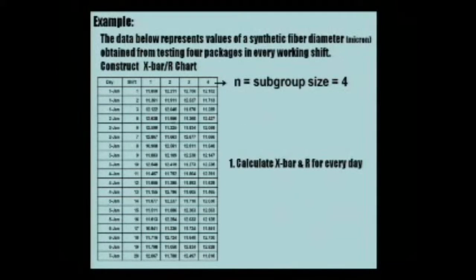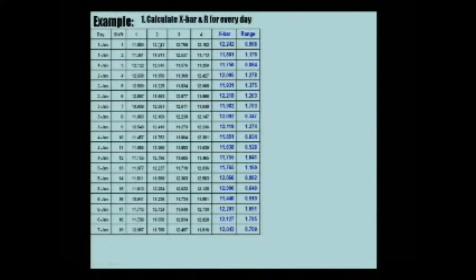The first step to construct a control chart is to calculate the average and the range of each sample. For sample shift 1, the average is 12.242 — that's the average of the four observations — and this is the range of those four observations. We repeat these calculations for every shift. So we are no longer dealing with individual values; we are dealing with the average of each sample and the range of each sample.